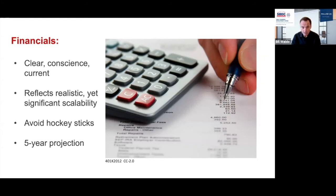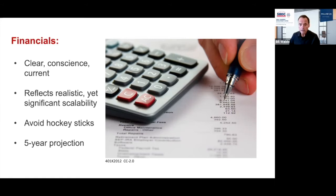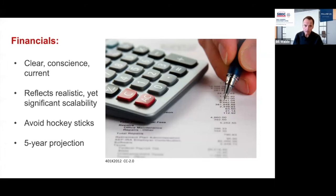Financials — what they're looking for is a clear, concise, current, updated five-year plan in a P&L format. It needs to be realistic. They don't believe any of it anyway, but they're looking for your best estimate of growth — a good trajectory going up. Avoid hockey sticks where you go from $5 million to $25 million in one year. A good growth projection goes to credibility. Five years is what investors want to see, not two.